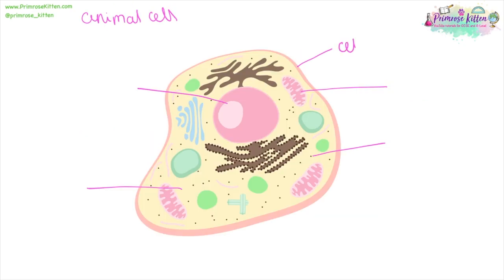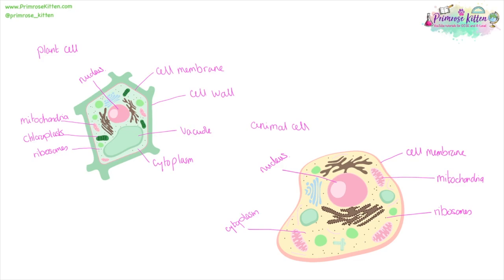Here we have our animal cell with our cell membrane, again controlling what goes in and out, our mitochondria where energy is produced, ribosomes which are responsible for protein synthesis, cytoplasm where most of the reactions take place, and our nucleus where the DNA is held and that's the control center of the cell. You'll notice there are several features of a plant cell that an animal cell doesn't share. For example, the cell wall, the vacuole, the chloroplasts. If you want a copy of these pictures yourself, you can download them in the free revision guide from my website.